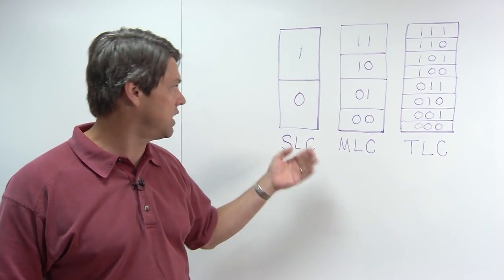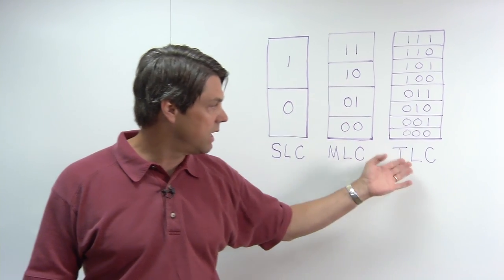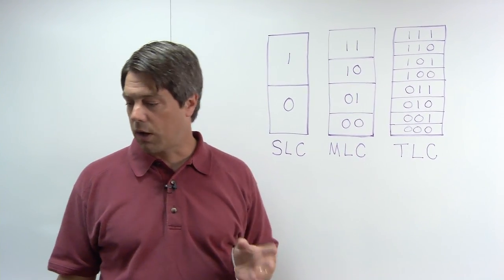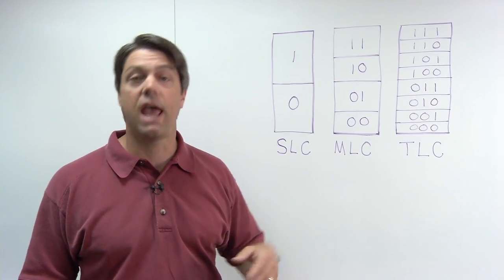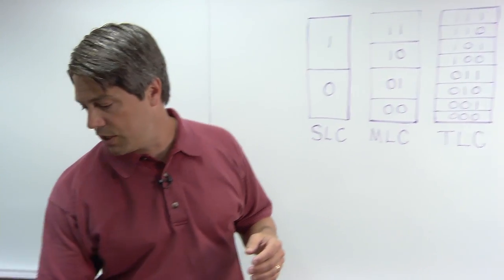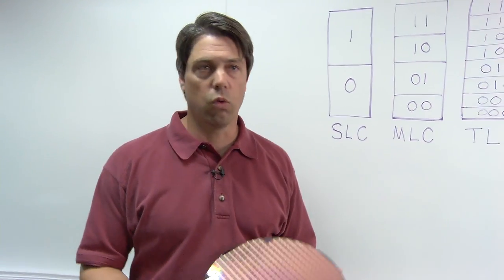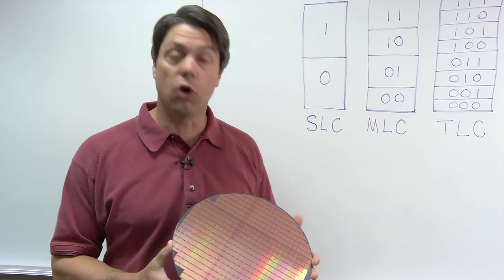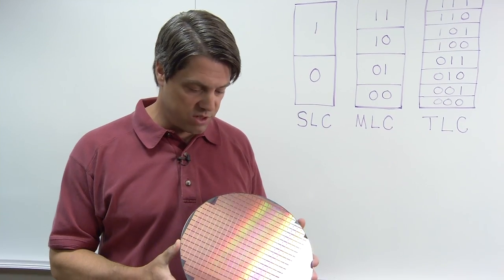So with SLC, we can store 1 bit, MLC 2 bits, and with TLC, we can store 3 bits. So combining 25 nanometer and TLC technology yields the world's most advanced and densest and the lowest cost flash memory technology.